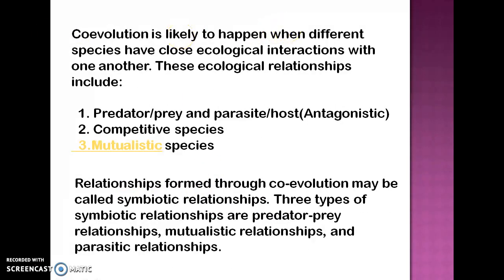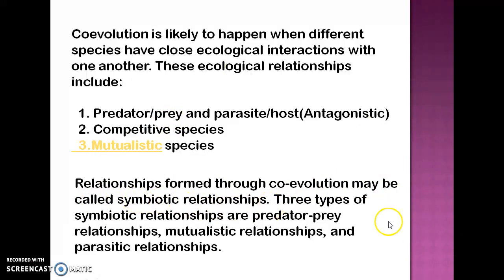Coevolution is likely to happen when different species have close ecological interactions with one another. These ecological relationships include predator and prey, parasite and host — both of which are antagonistic — as well as competitive species and mutualistic species. The relationships formed through coevolution may be called symbiotic relationships: predator-prey, mutualistic, and parasitic.